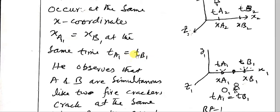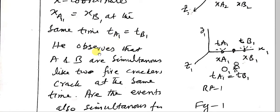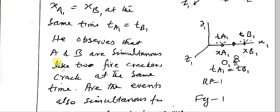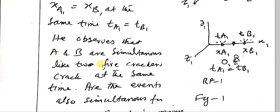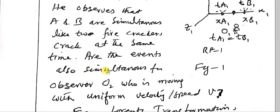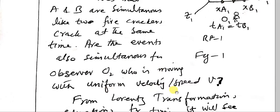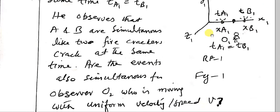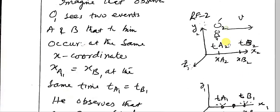The events take place at these two positions, so observer O1 observes that A and B are simultaneous — like two firecrackers cracking at the same time. But are the events also simultaneous for observer O2, who is moving with uniform velocity or speed v?